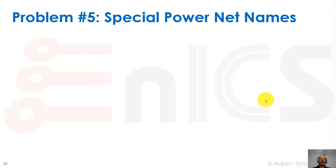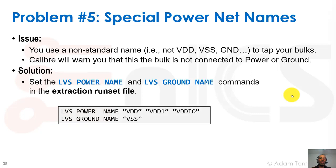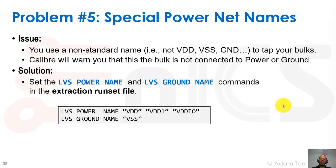Problem number five: special power names. The issue is a non-standard name, not VDD, VSS, or GND, tapping your bulks. Calibre will warn you that the bulk is not connected to power and ground. It usually won't come out as an error, but you should update the power and ground names inside Calibre. Using LVS power name with a list of power names and LVS ground name with a list of ground names, Calibre will accept these as bulk connections without warnings and it will come out good in the ERC check.